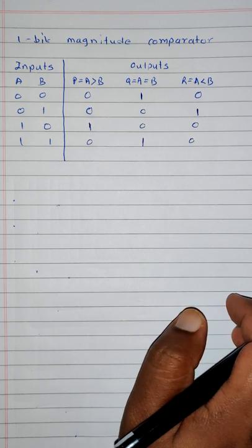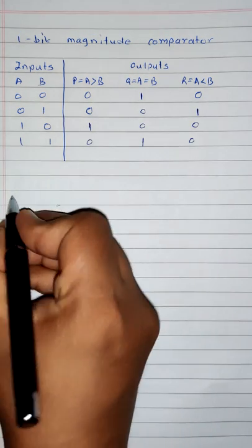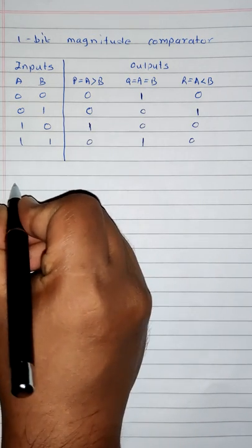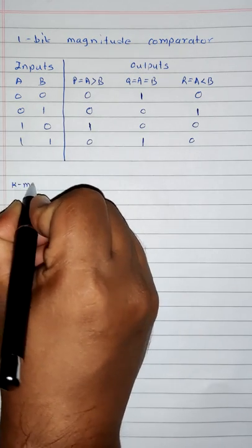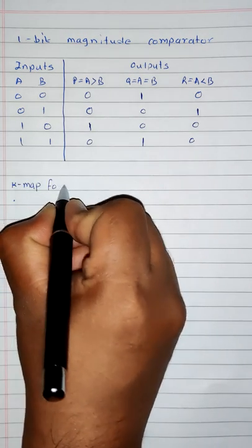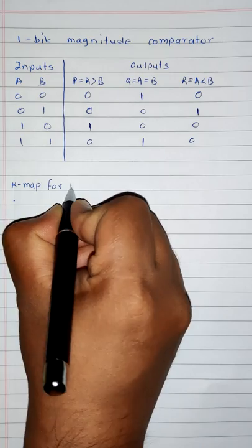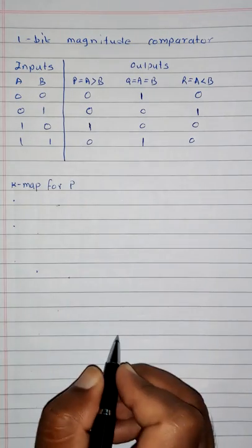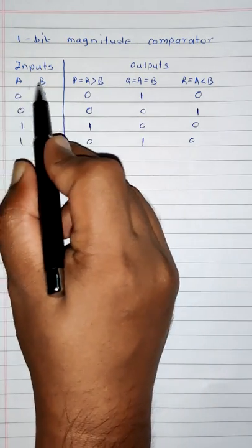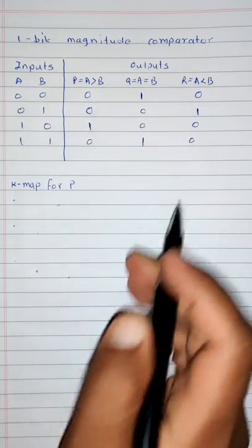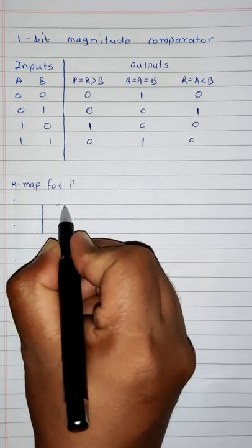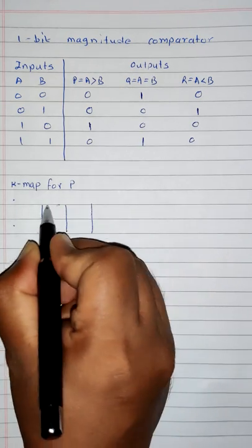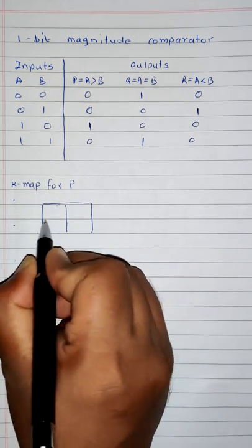Now we will solve equations for P, Q and R. For that, we will solve K-map for P, Q and R. Let's solve K-map for P. We will require a two-variable K-map because inputs are only two, so let's draw a two-variable K-map with two rows and two columns.